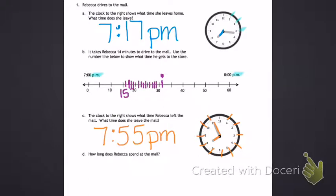Last, letter D. How long does Rebecca spend at the mall? She gets to the mall at 7:17. She leaves the mall at 7:55. This is happening within the hour, so I can subtract the minutes. 55 minutes minus 17 minutes.